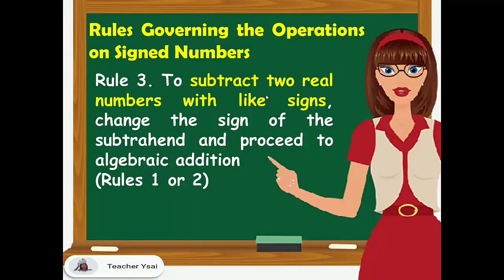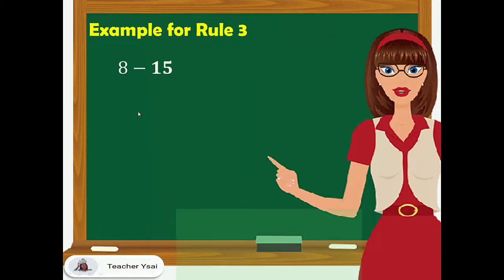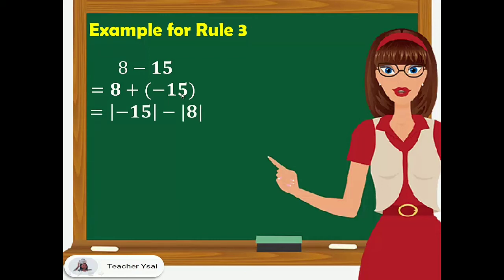Rule number 3: to subtract two real numbers, change the sign of the subtrahend and proceed to algebraic addition, applying Rule 1 or 2. For example, 8 minus 15. We change the sign of the subtrahend 15 from positive to negative and proceed to addition: 8 plus negative 15. Applying Rule 2, the absolute value of negative 15 minus the absolute value of 8 — the sign of the bigger absolute value is negative, so we prefix the negative sign. Negative times (15 minus 8) gives us negative 7.